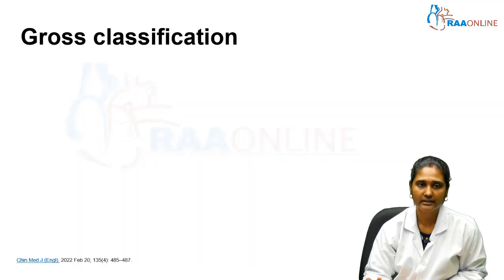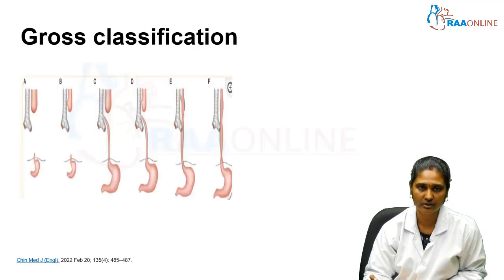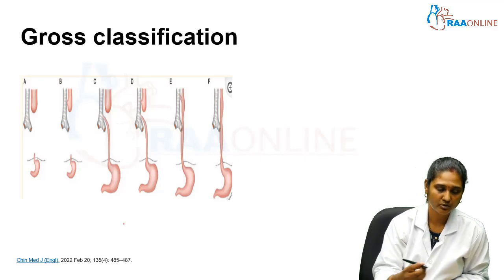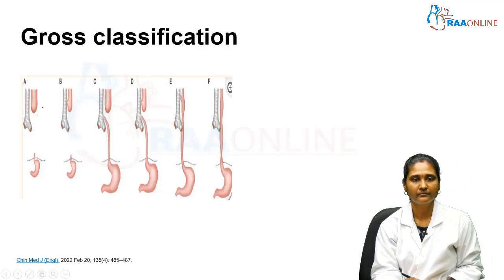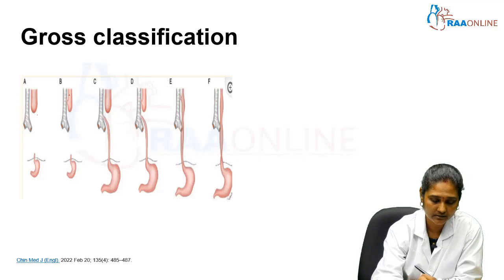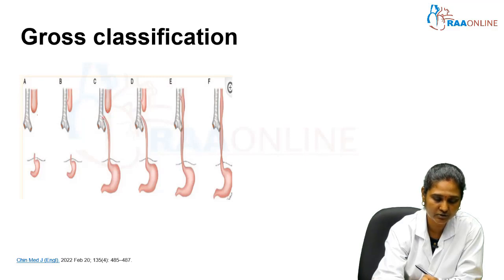Regarding the Gross classification of tracheoesophageal fistula: Type A is pure esophageal atresia with no fistula. Type B has esophageal atresia with the fistula on the proximal side. Type C has esophageal atresia with the fistula in the distal part of the esophagus.